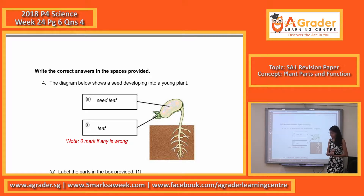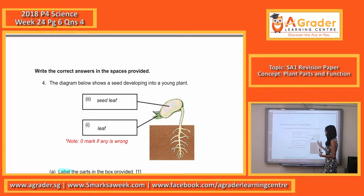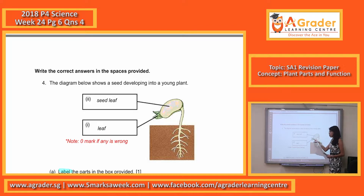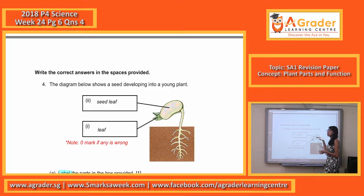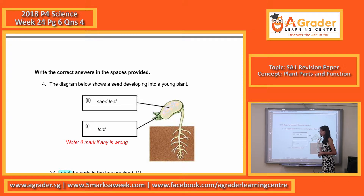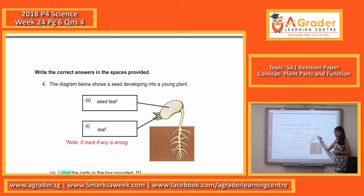Question 8 is asking you to label the parts in the box of the diagram. Always remember, the part sticking out from the young plant is called the leaf, which is actually the true leaf, and the inner seed itself is actually the seed leaf. We have to make sure this is not called just 'the seed' — be more specific. The entire thing is the seed, but the inner part is actually the seed leaf.